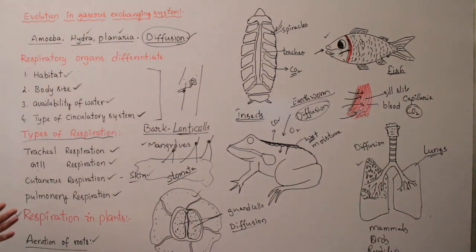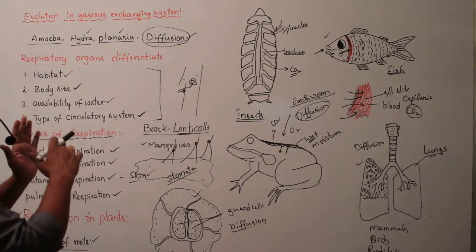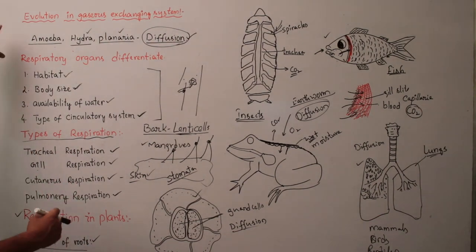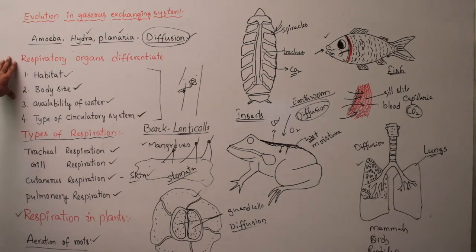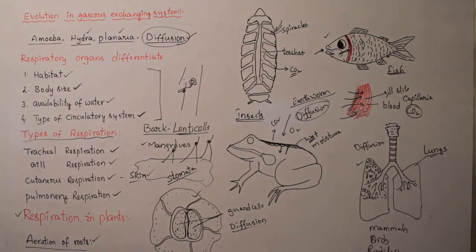The evolution in gaseous exchange systems from unicellular organisms to multicellular organisms shows different methods. This is the evaluation of gaseous exchange. In this topic, we get one or two mark questions, most commonly one-mark questions. Children, read carefully, line by line, and then complete the task. Thank you.